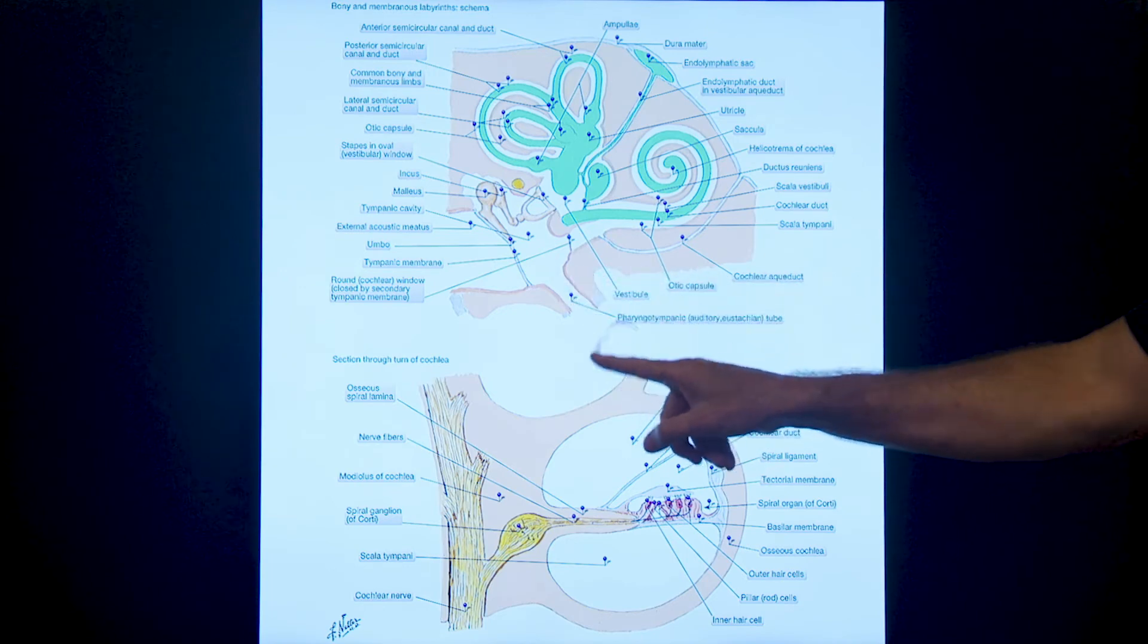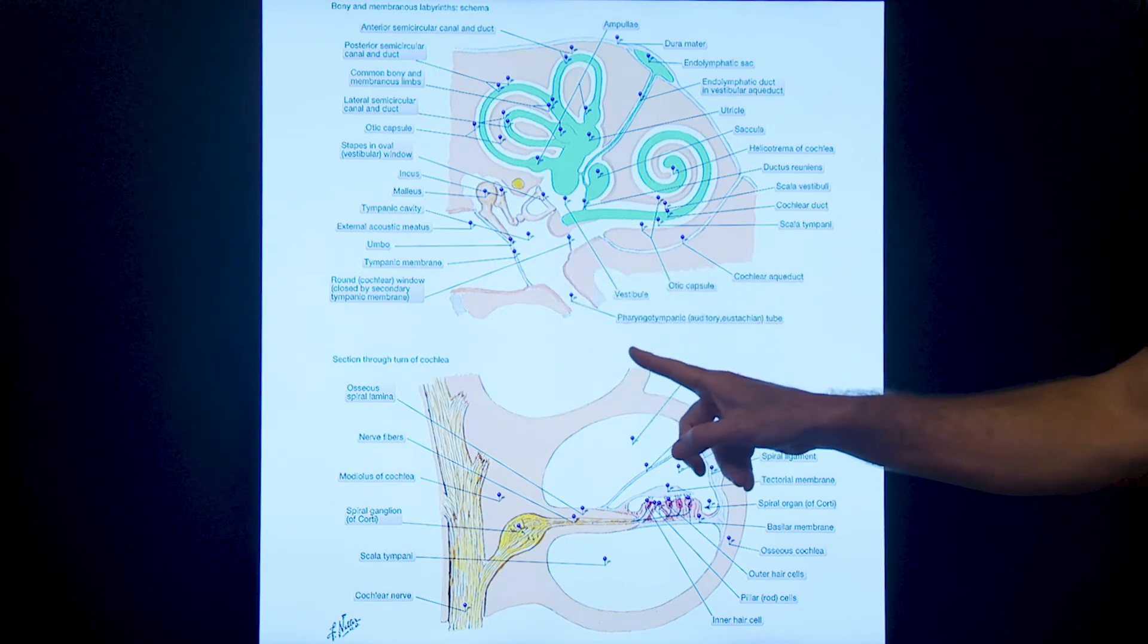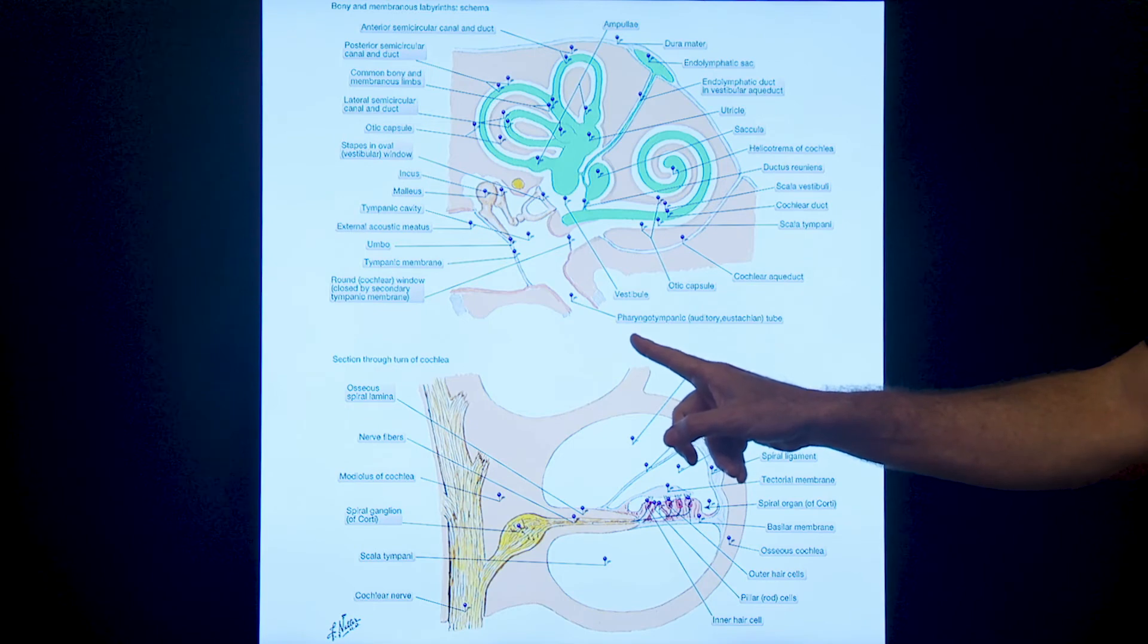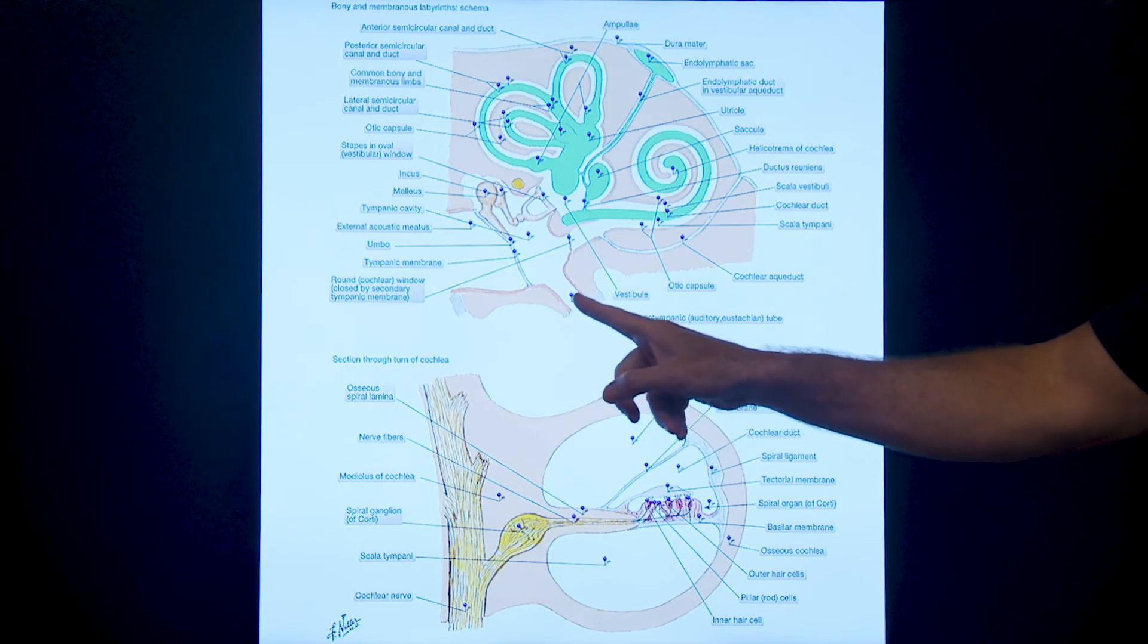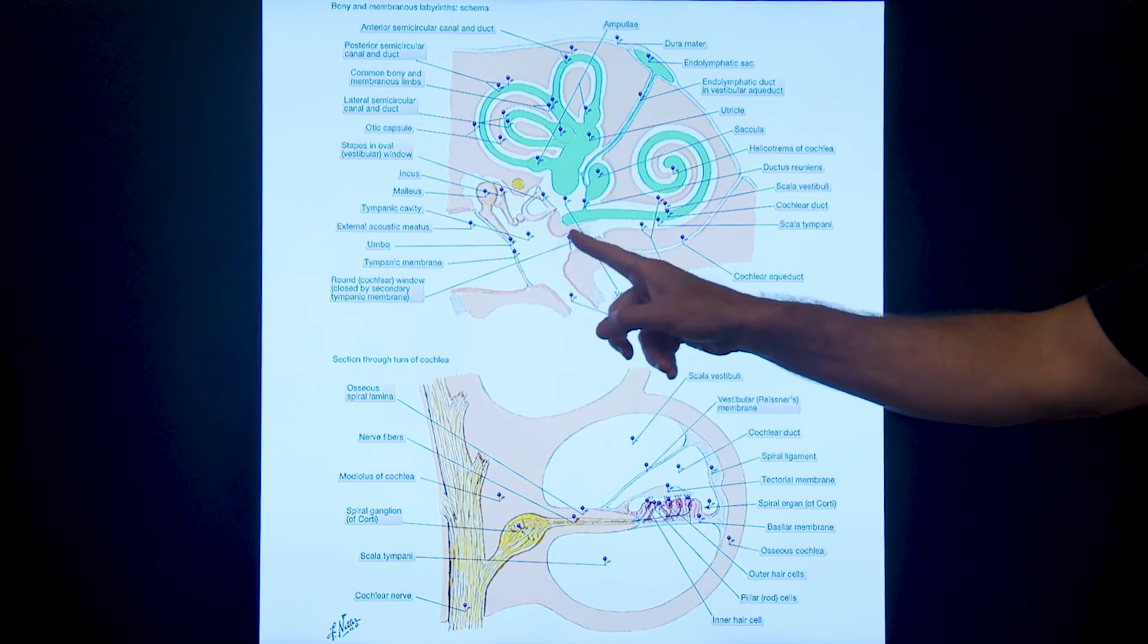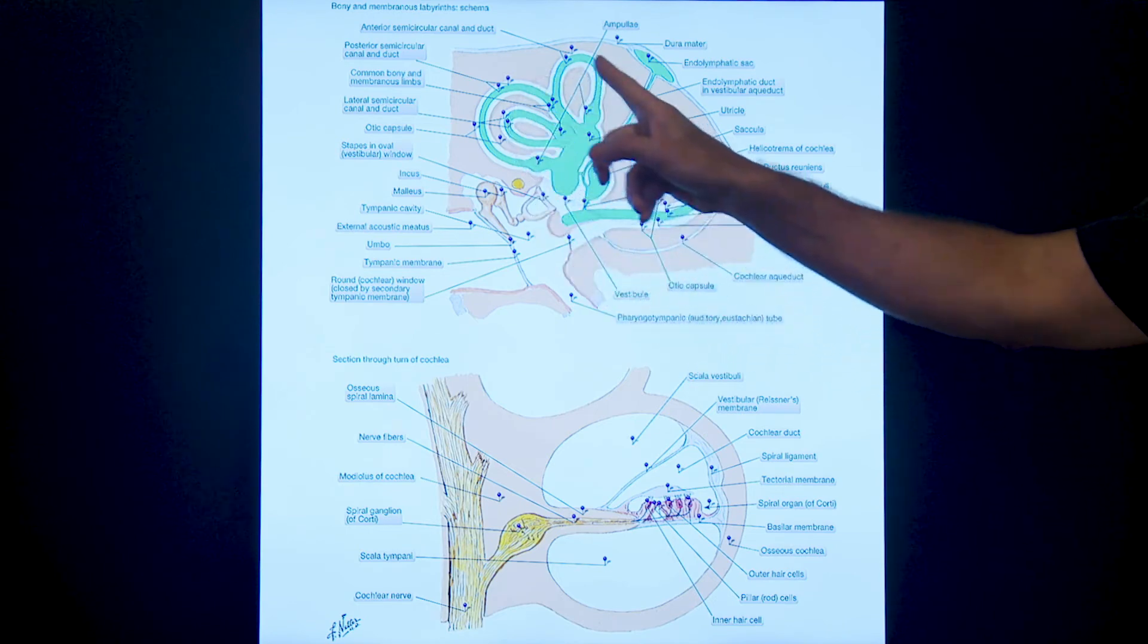The source lives down here - this is the eustachian tube. Down here is the nose. Inflammation in the nose is typically the cause. It goes up the eustachian tube and goes across that same membrane to get into the fluid, and that's what generated the problem in the first place.